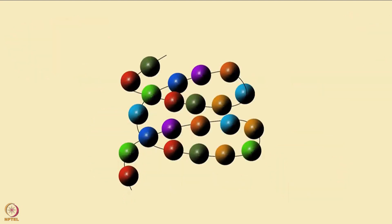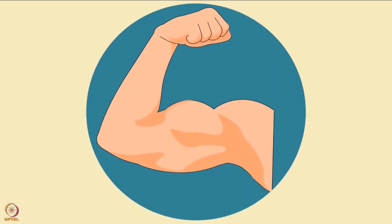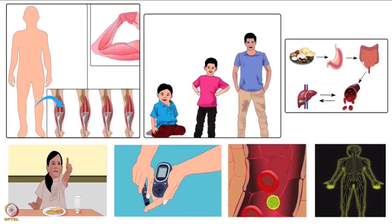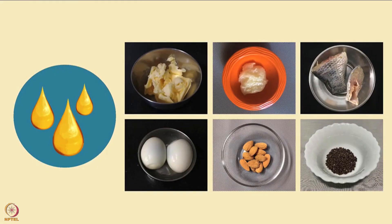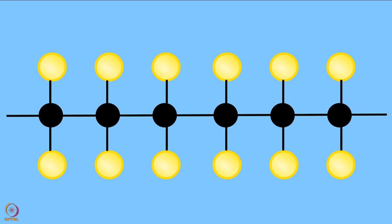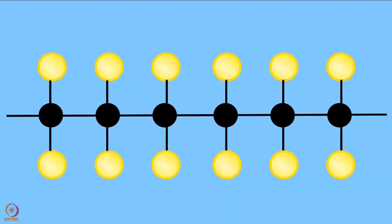We constantly break down proteins and make new proteins. We cannot store protein. So we need to get enough protein from various food sources daily. Functions and daily requirements of protein are discussed in another tutorial. Now let's move on to fats.